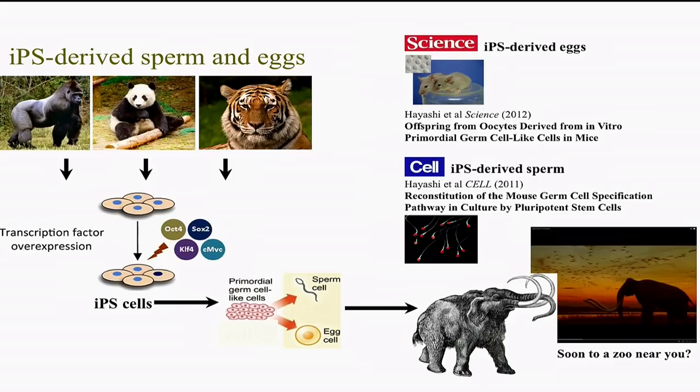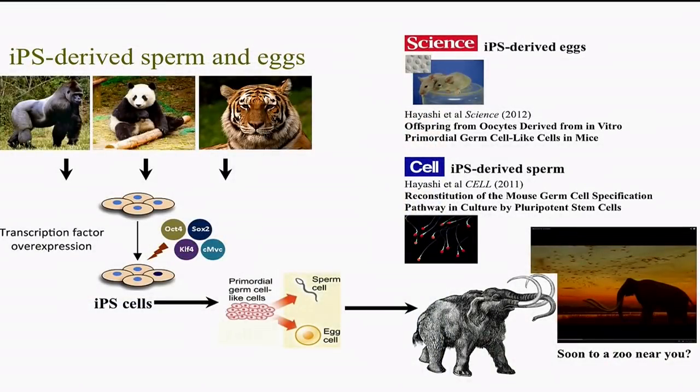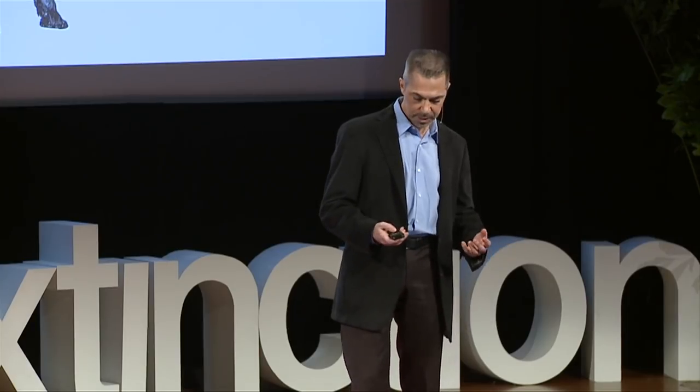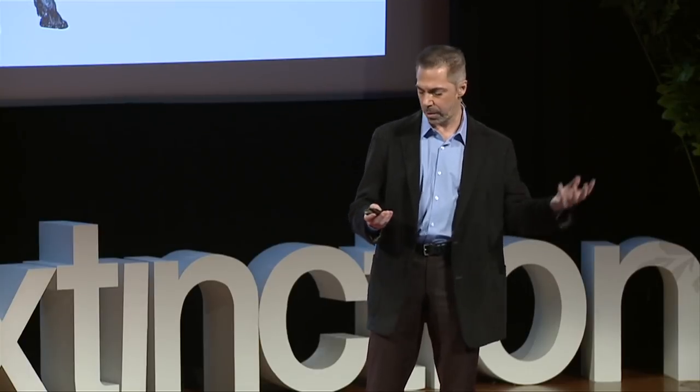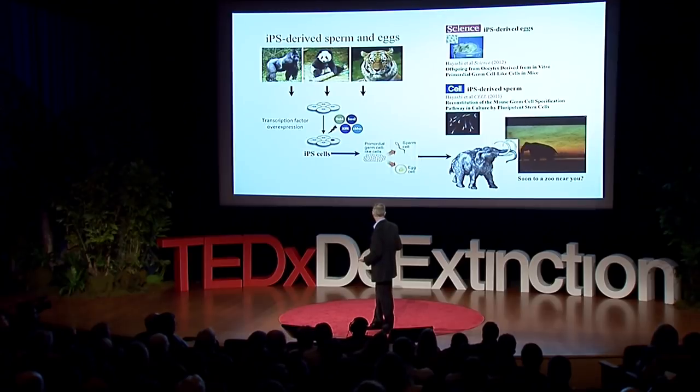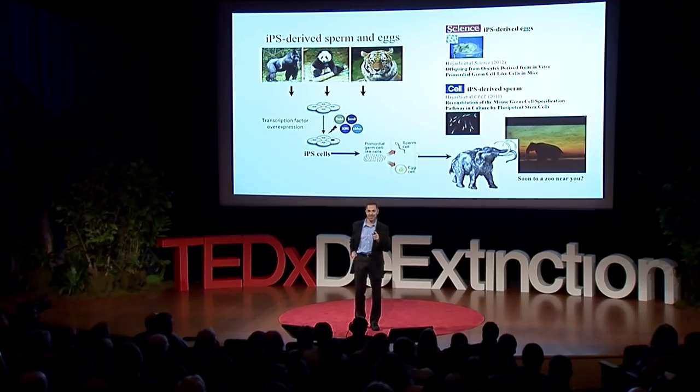Indeed, that does work. A few months ago, a group in Japan turned iPS cells into eggs that resulted in live pups, and a year before that the same group turned iPS cells into sperm that also created live pups. So the goal for extinct species is simply to start with, say, an elephant cell, upregulate the various genes for tusks and other traits, create sperm and eggs, and then create an entire organism. But just in case that doesn't work, for those Jurassic Park fans — I actually have a piece of amber in my pocket, and it really does have a mosquito in it. Thank you.